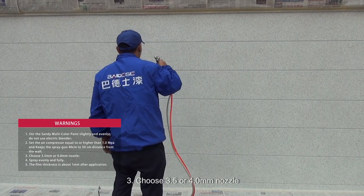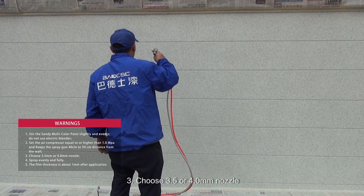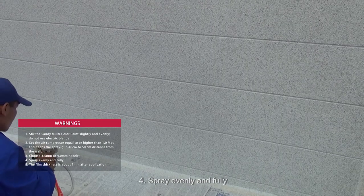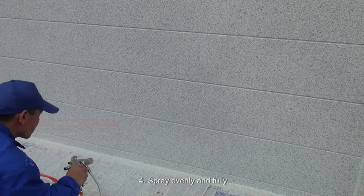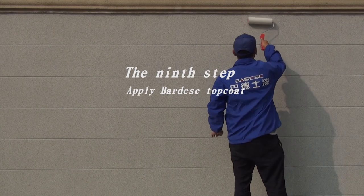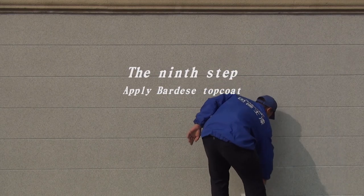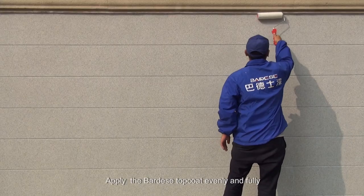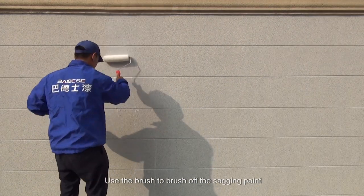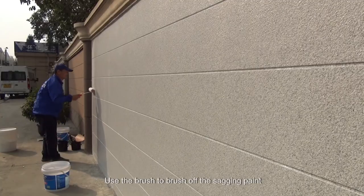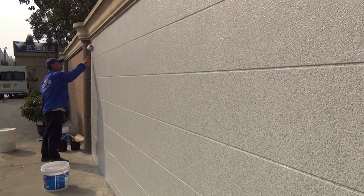Four: spray evenly and fully. The ninth step: apply Bardese's top coat. Apply the Bardese top coat evenly and fully. Use the brush to brush off the sagging paint.